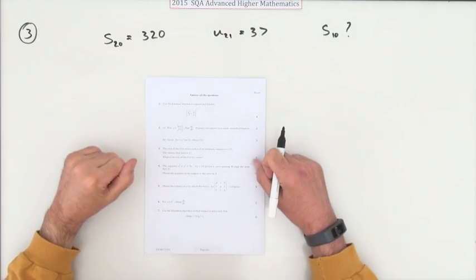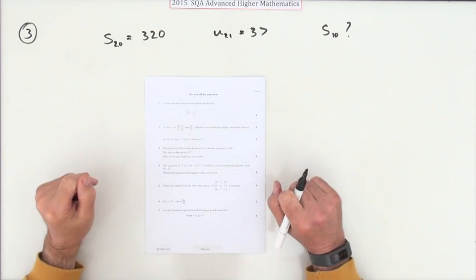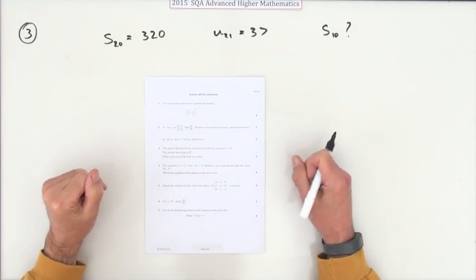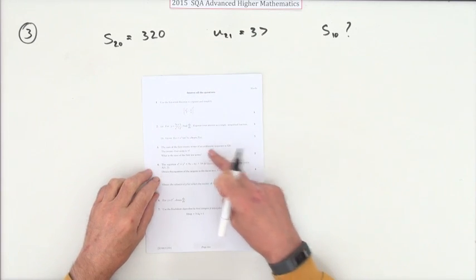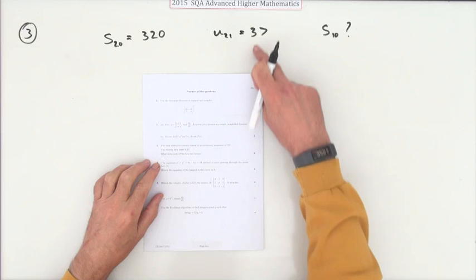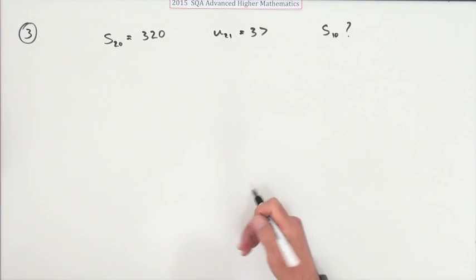Number three from the 2015 Advanced Higher Maths. It's a little series question, just a wee toy of a question really. You're given the sum of the first 20 terms of an arithmetic sequence, you're given the 21st term, and it wants to know the sum of the first 10 terms.